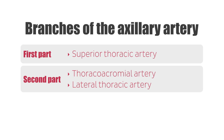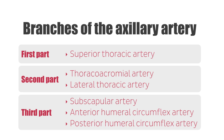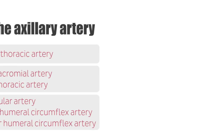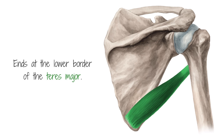And in the third part, there are three branches: the subscapular artery, the anterior humeral circumflex artery, and the posterior humeral circumflex artery. After the third part, it leaves the axilla at the lower border of the teris major and becomes the brachial artery.